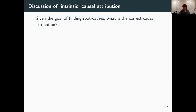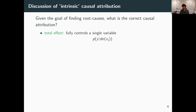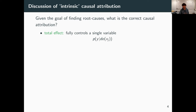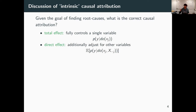Given this goal, the question is what is the correct causal attribution. Dominic gave the answer already; let me now relate it to total causal effects and direct effects. The total causal effect is basically: I do a hard intervention on xj and see what happens in my response variable y — I fully control one variable and see what happens in another.